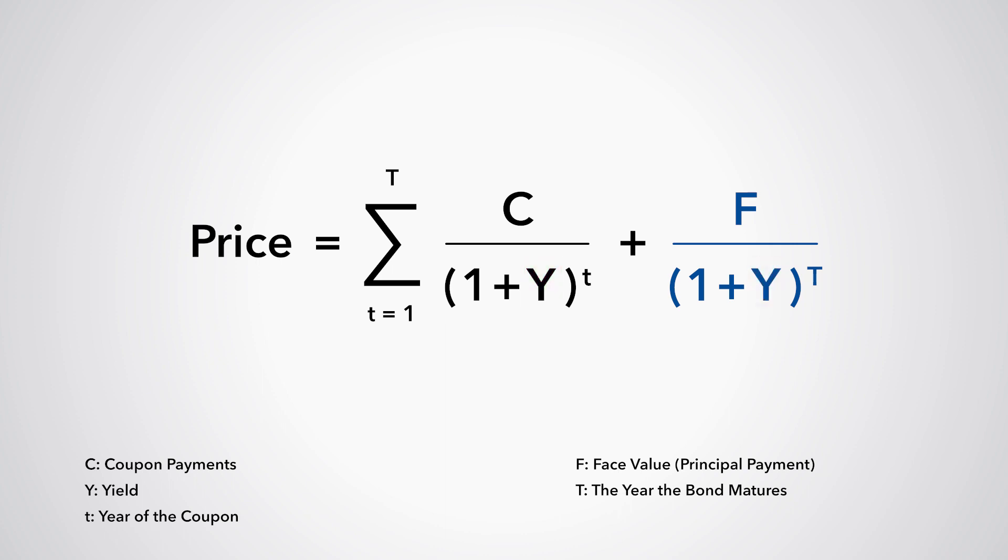Let's illustrate with an example. We have a 5-year bond with 5% annual coupon and a face value of $100, repaid in year 5. Let's assume its price is $104.45. What is the yield?